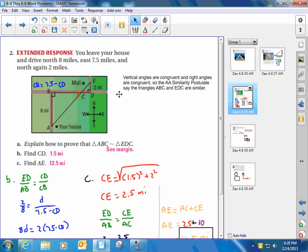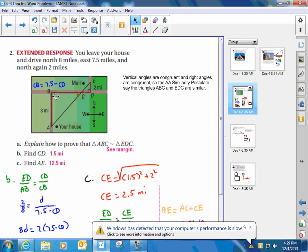We see in this illustration when we connect these points that we have similar triangles, because vertical angles are congruent and right angles are congruent. The angle-angle similarity postulate says if two angles in one triangle are congruent to two in another, then the triangles must be similar.